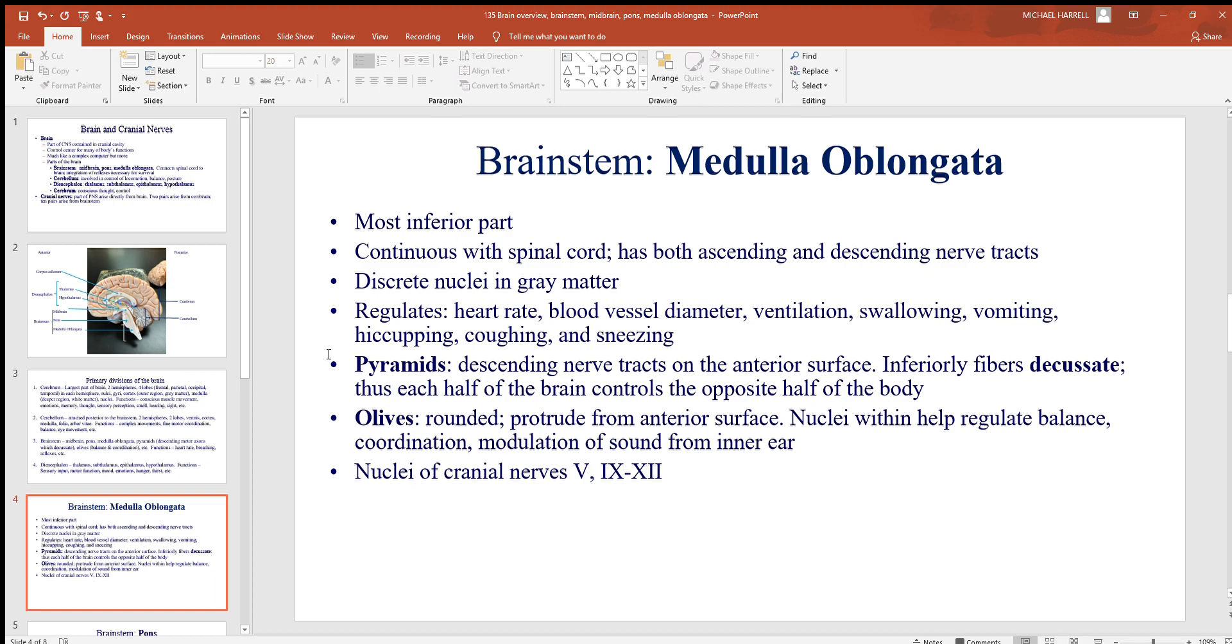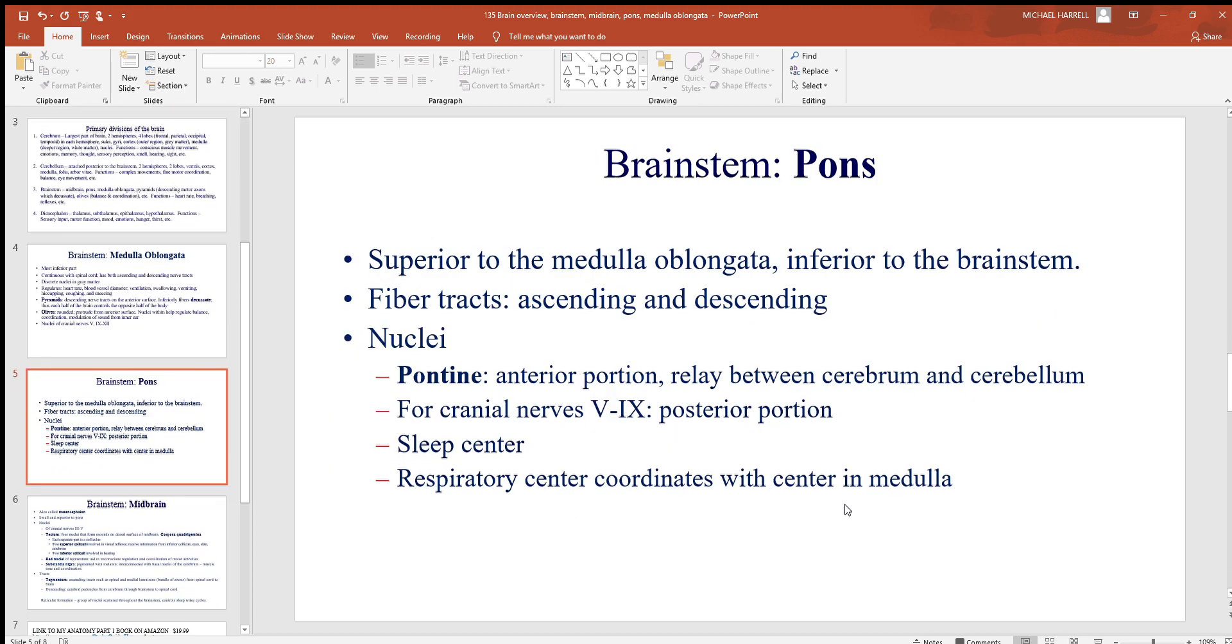Breathing, controlling the muscles of ventilation, swallowing, vomiting, hiccuping, coughing, sneezing - so many important functions here. And there again are the pyramids, places where you have axons crossing from one hemisphere of the brain to the opposite side of the body. Again, that's why the left side of your brain controls the right side of your body and just the opposite. There again are the olives, a lot to do with balance, coordination, and also modulation of sound. And notice a few of our cranial nerves: number five and then nine through twelve all come off the medulla oblongata.